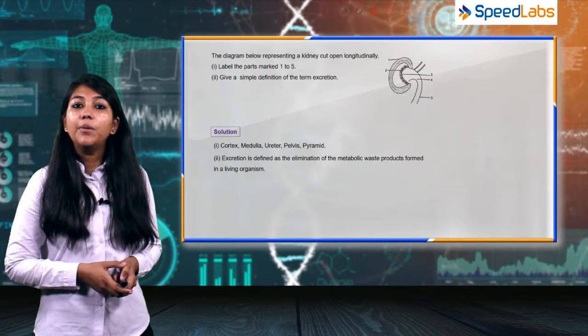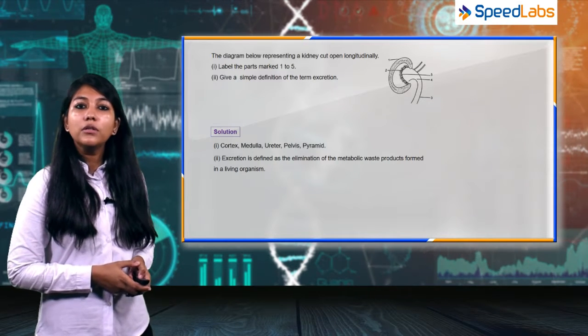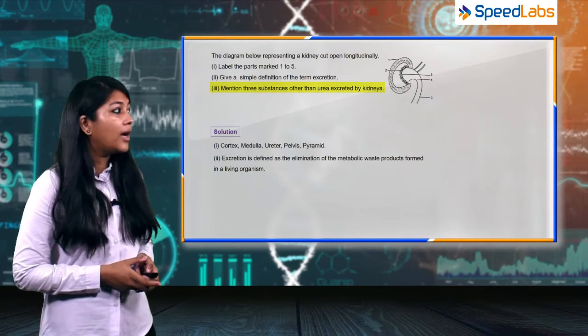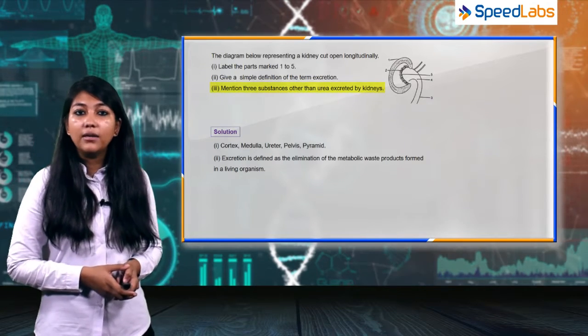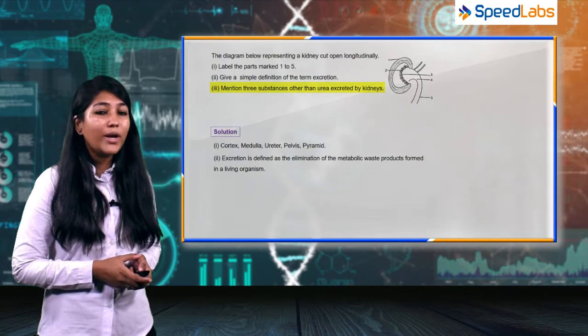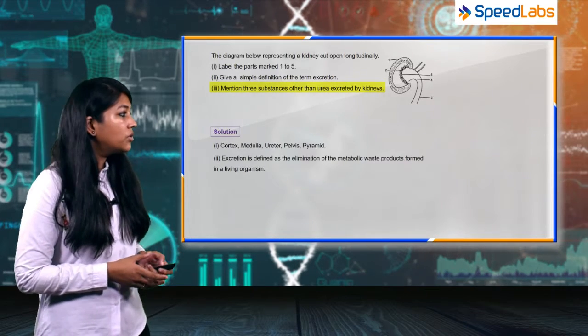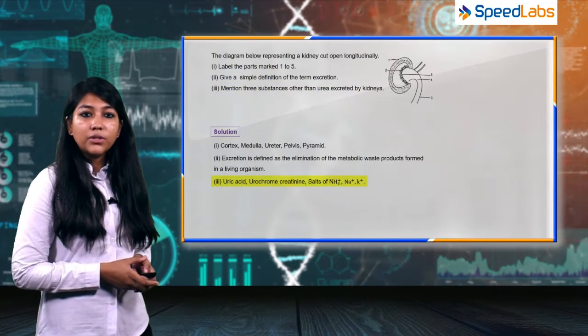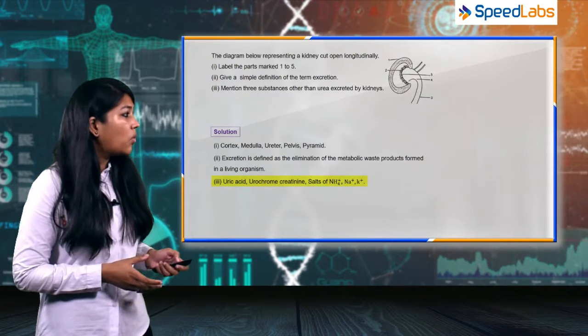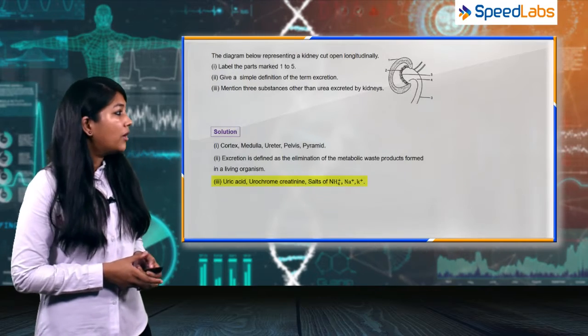Moving on to the third part of this question: mention three substances other than urea that are excreted by the kidneys. The solution: other substances can be uric acid, urochrome, creatinine, then certain salts like sodium, potassium, ammonium.